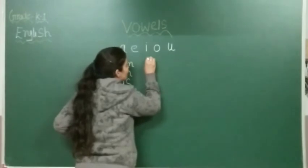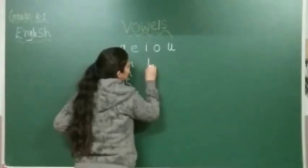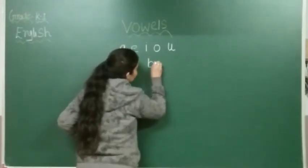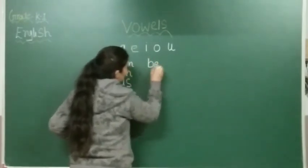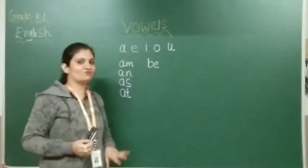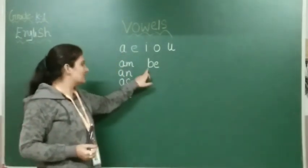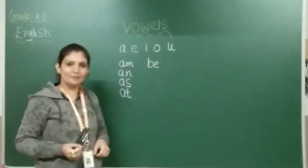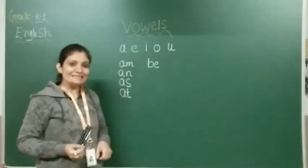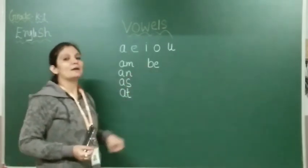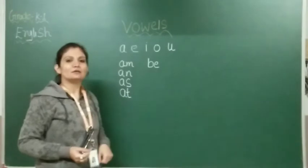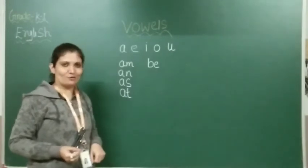First E-sound word is B, E. In phonics, B says 'b', E says 'e' — BE.